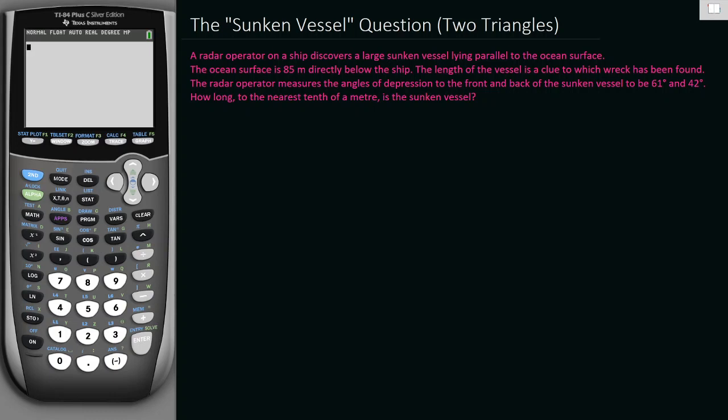Hi everyone! In this video I'm going to go over one version of what's called the sunken vessel question. This can be set up a few ways. This one's going to end up being a two triangle right angle triangle problem, but there's other ways that you can set it up where you don't actually get right angle triangles. Let's go through and see if we can figure out what the diagram looks like and then try to solve this problem.